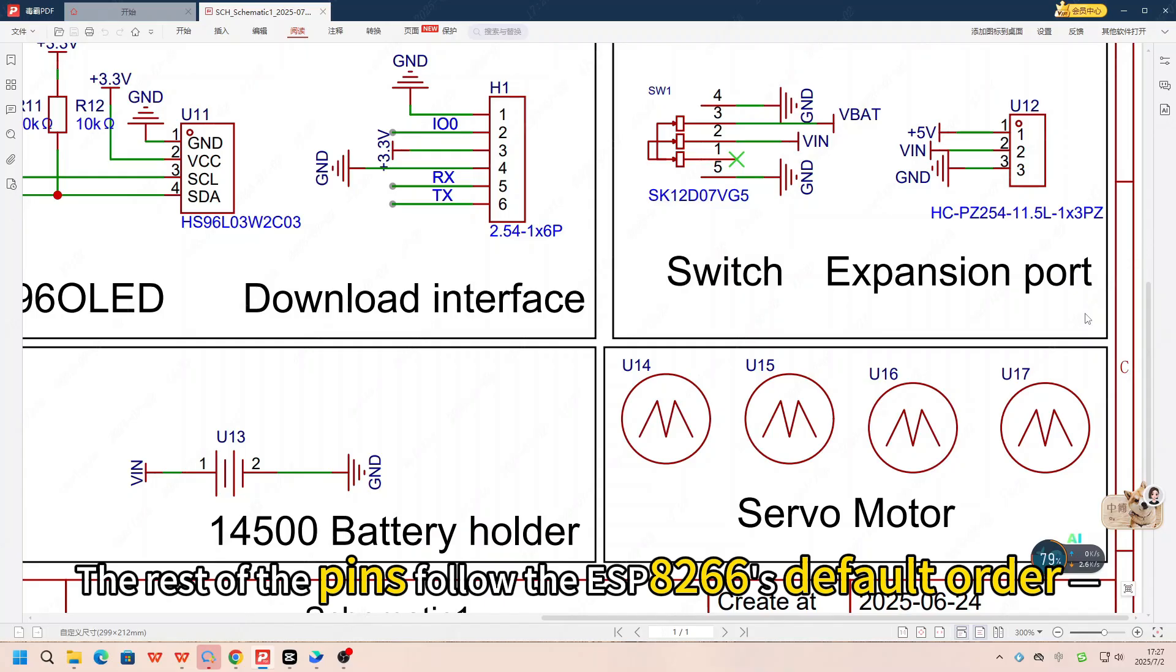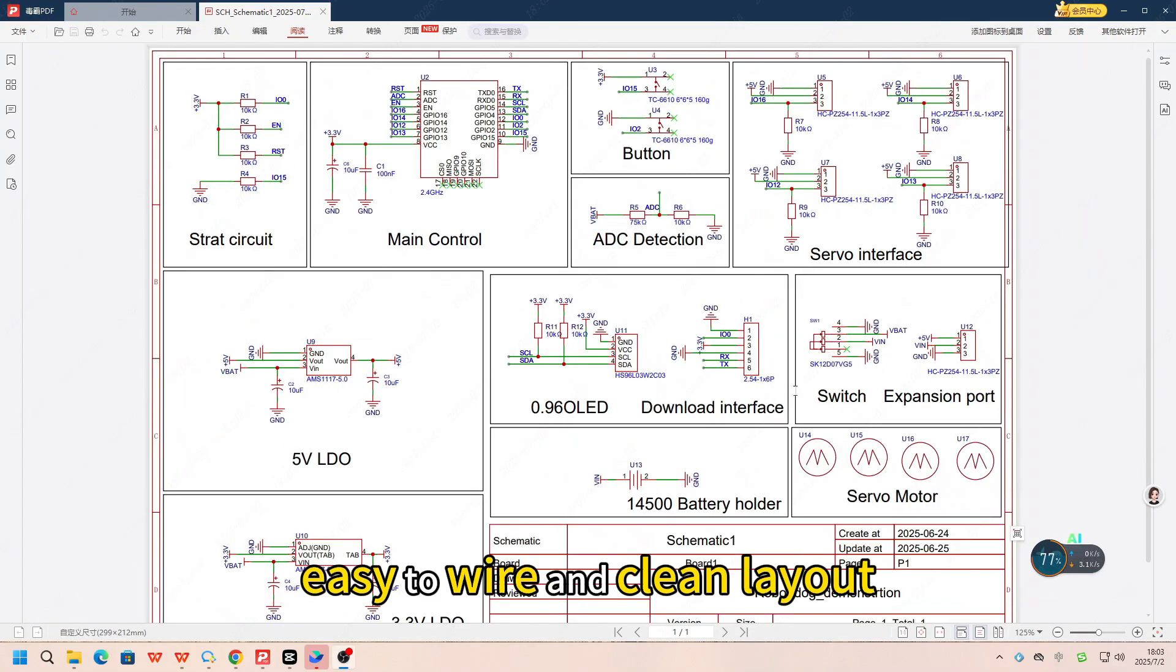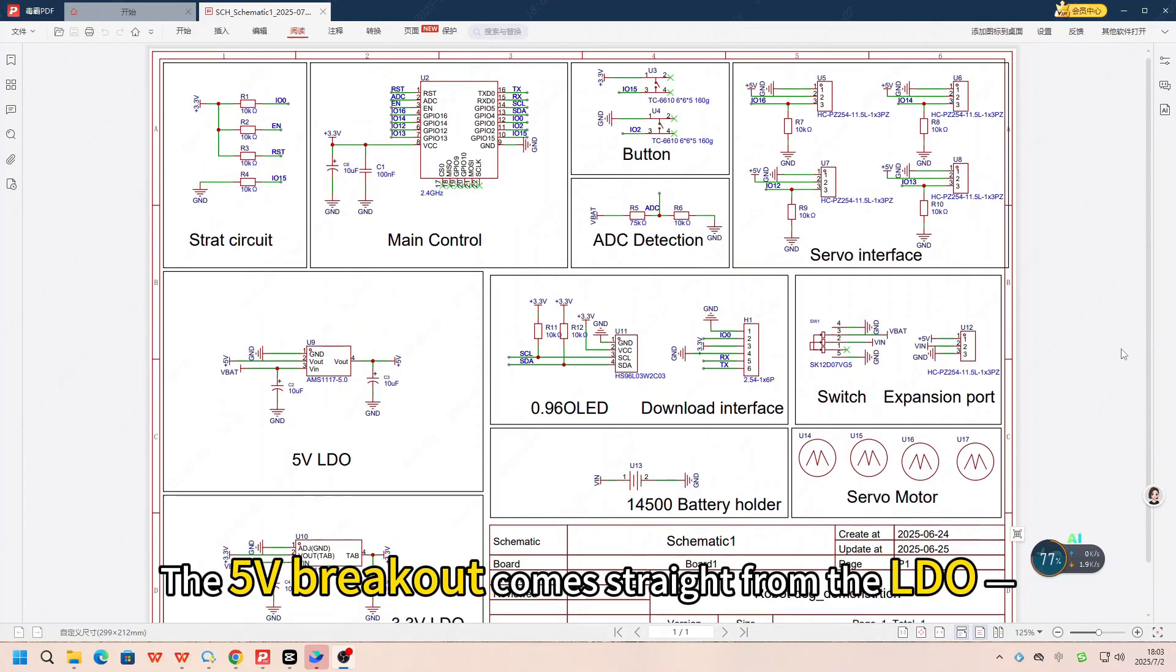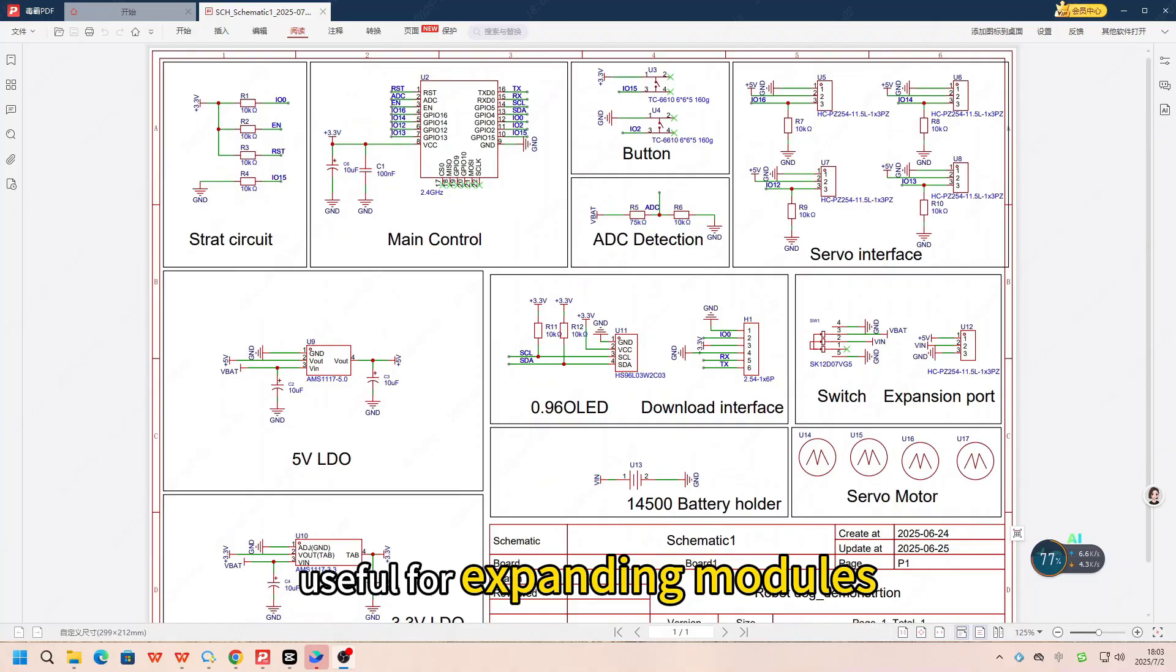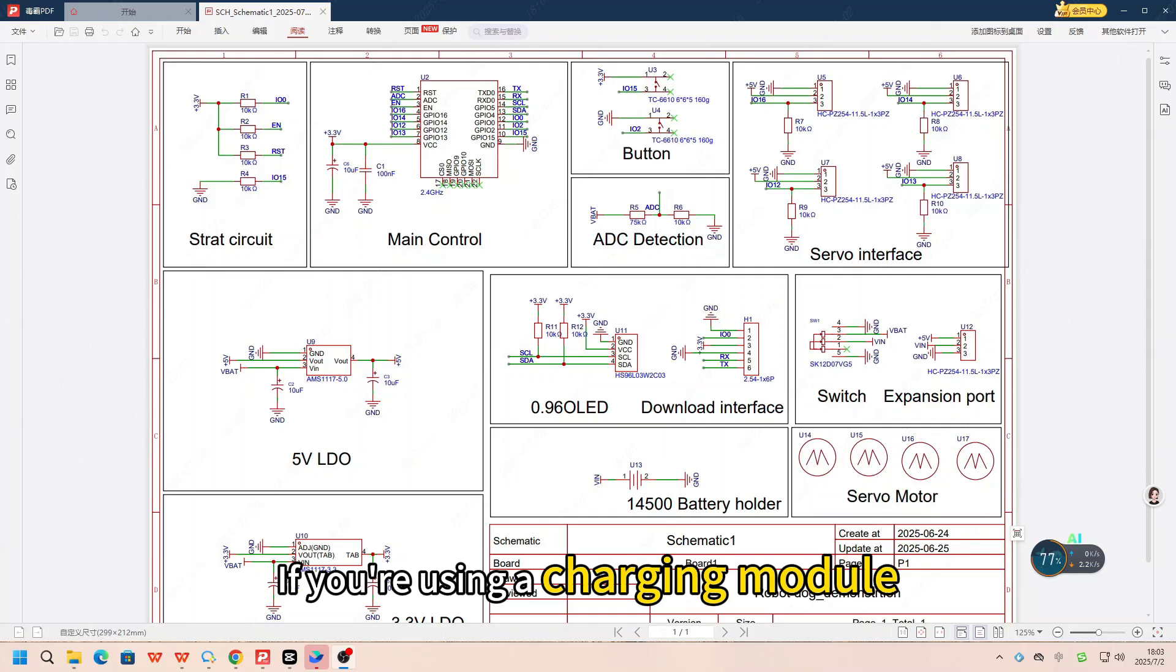The rest of the pins follow the ESP8266 default order, easy to wire and clean layout. The 5V breakout comes straight from the LDO, useful for expanding modules. The battery header connects directly to the batteries, if you are using a charging module.